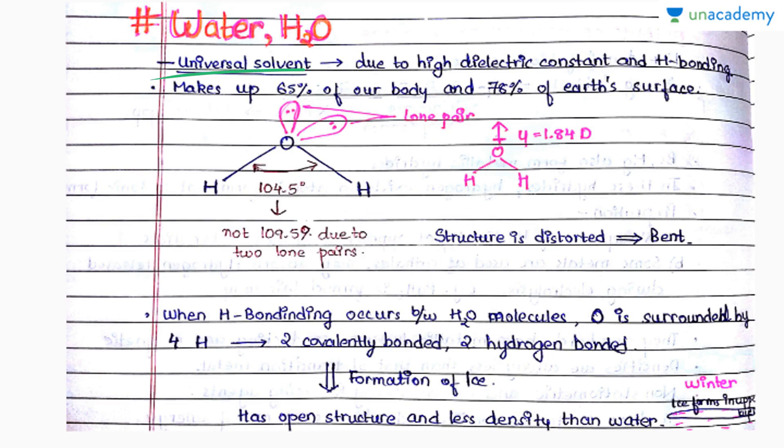Starting with water, it is the universal solvent—it has a high dielectric constant and hydrogen bonding is also shown by it, so it can dissolve almost everything. It makes 65% of our body and 68% of the earth's surface. This is the structure of hydrogen: bond pair, lone pair, lone pair. Due to the lone pairs, our angle is 104.5 degrees, which is less than the expected angle.